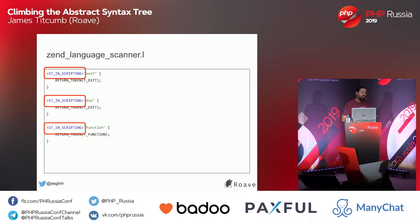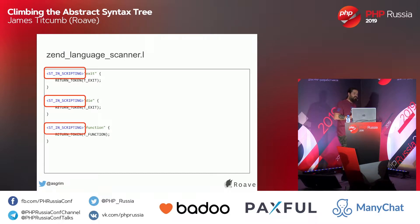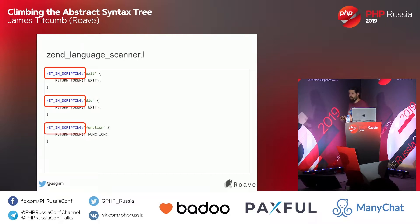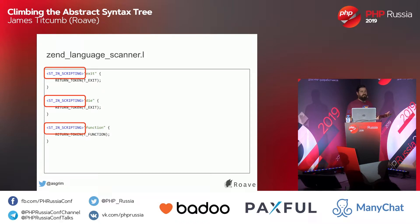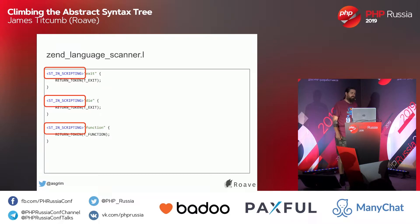The lexer is a state machine. As it progresses through your code, it changes state. The first part in the angle brackets is basically what state you need to be in for this particular token to match. A certain token will only match in a particular context or state. This particular one is when we're scripting — that's the normal default state. There are other states like being inside double quotes, or inside heredoc or nowdoc, and things like that.